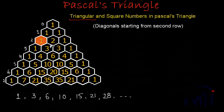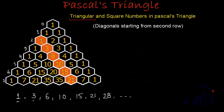Looking at this diagonal: this is exactly the same series. This is 1, the first triangular number; then 3, the second triangular number; then 6, the third; 10, the fourth; 15, the fifth; 21, the sixth. The next term will be 21 plus 7 which is 28 — the seventh triangular number. So the diagonal starting from the second row is a series of triangular numbers.